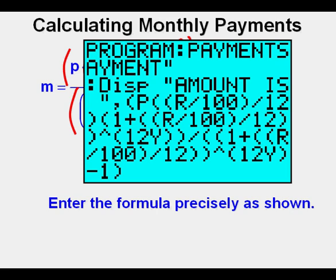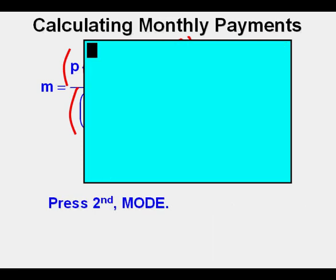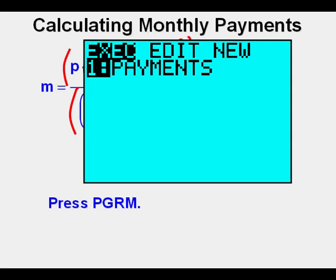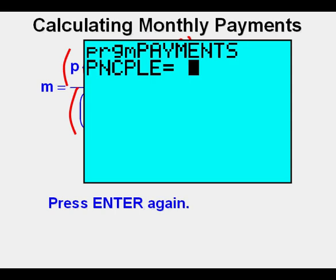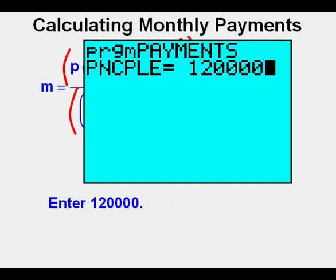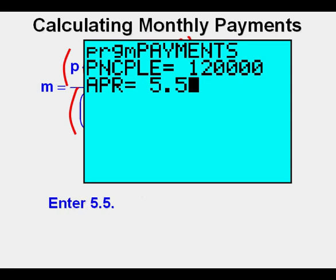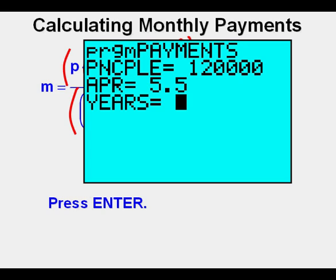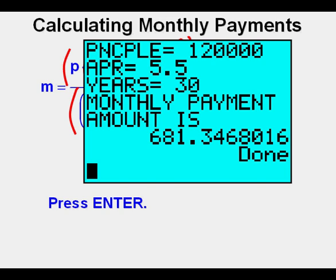Now the program is written. Exit out by pressing second, then the mode key for quit. Now we will see if the program really works. Press the program key and choose the Payments program. Press enter. We are going to take out a $120,000 loan to buy a house. Enter $120,000 — it was shortening the word principal that allowed us to get this on one line. Press enter. For this loan we are getting a 5.5% interest rate, so enter 5.5. Press enter. We are getting a conventional 30-year loan, so enter 30. Press enter. We see that our payment is $681.35 per month on this loan. Shortening that first prompt enabled us to get all the key information along with our answer in a single view screen display.